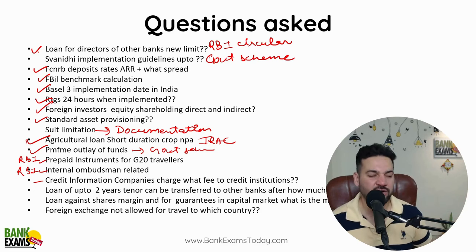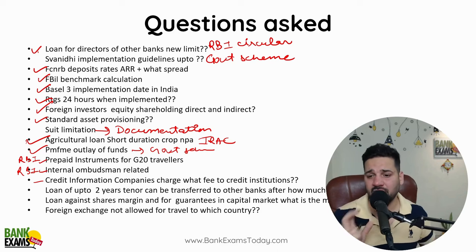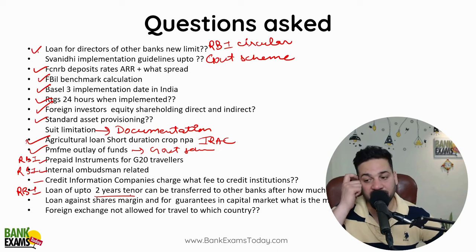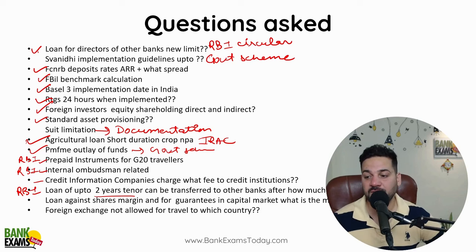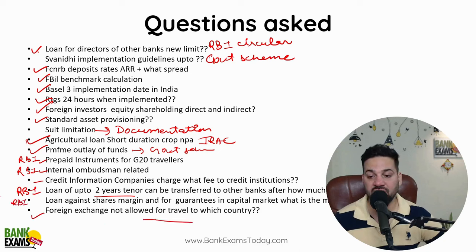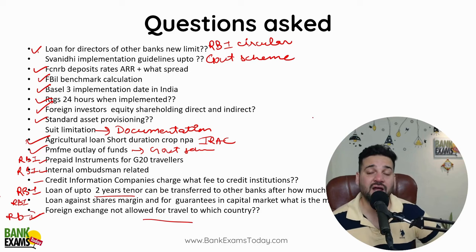PMFME scheme outlay — this is also a government scheme question. Prepaid instrument — this is a news-based question but also relates to an RBI circular. Internal ombudsman scheme — again an RBI circular. Credit information charge: how much fee does a credit institution charge? We hadn't gone into that depth before — it's around 400 rupees. Loan of up to 2 years tenure can be transferred to other banks after how much minimum operational time. Loan against shares — what should the margin be? This is again an RBI circular.